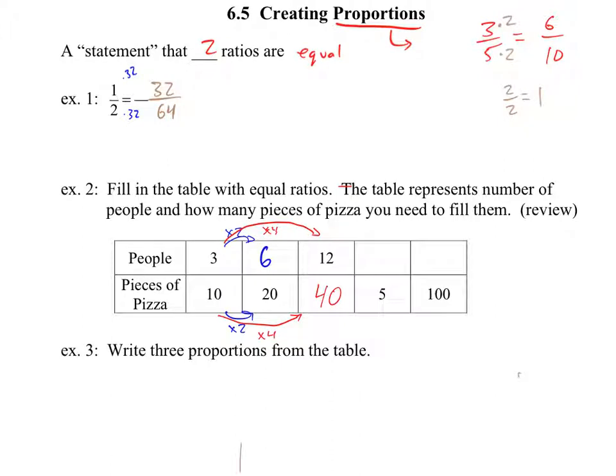Now, we want to figure out the number above the 5. How many people will 5 pieces of pizza fill up? Where do you want to start? 10, 20, or 40? Let's do 40. Do we multiply or divide? Divide.